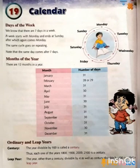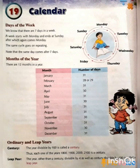Good morning students. Today, Class 4, we are going to take up the new chapter — chapter number 19, that is Calendar. Children, every one of us has seen a calendar. You have also seen it. What do you see in the calendar?